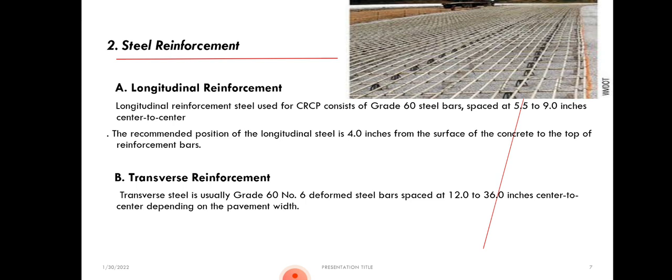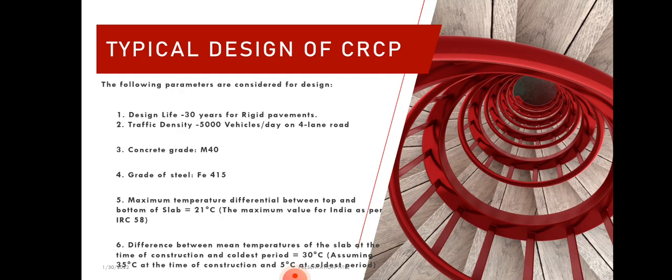Transverse reinforcement is grade 60 deformed steel bar at a spacing of 12 to 36 inches center to center across the pavement width. Moving on to design features of CRCP: the design life is 30 years. The traffic density handled by the continuously reinforced concrete pavement is 5,000 vehicles per day on a 4-lane road. The concrete used is M40 grade concrete, and the grade of steel used is Fe 415.